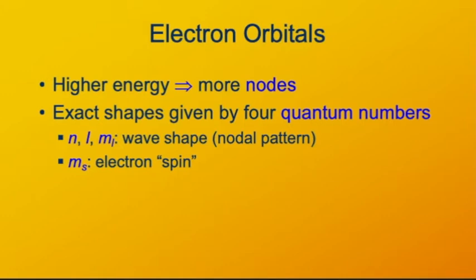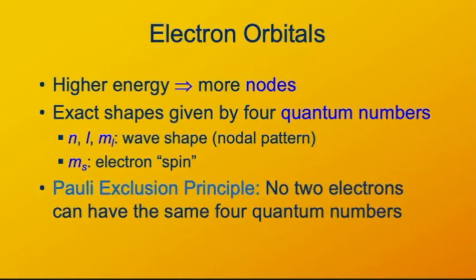Electrons are a special type of particle called a fermion. Fermions have the special property that no two fermions can be in the same wave. They cannot occupy the same quantum state.